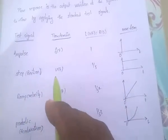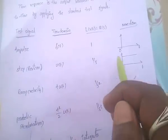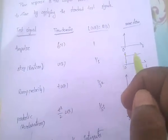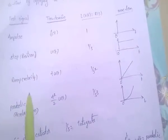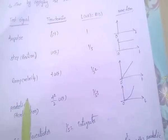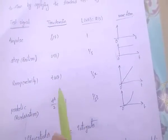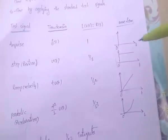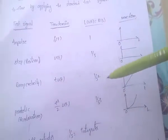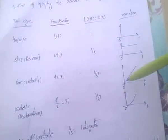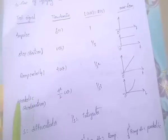Coming to the step signal, it is denoted by u(t) and the Laplace transform of u(t) is 1/s. Coming to the ramp signal, or velocity signal, it is denoted as t·u(t), and the Laplace transform of t·u(t) is 1/s².